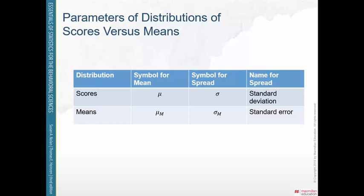Here are some key symbols to remember: population mean is mu; population standard deviation is sigma; the mean of the sampling distribution is mu sub M — the mean of the distribution of sample means; and standard error is sigma sub M or sigma sub x-bar, meaning the standard deviation in the distribution of sample means. Good luck studying. Let me know if you have questions.